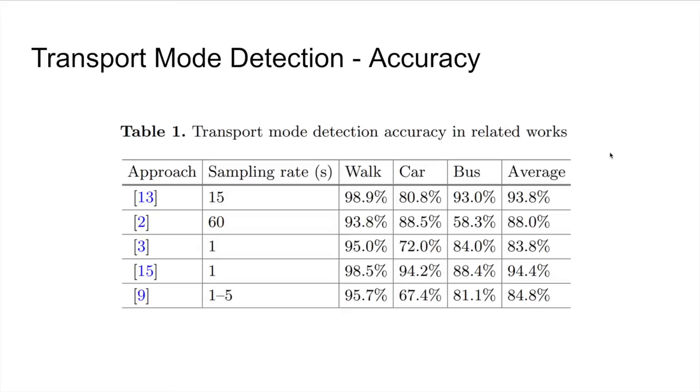Here are some results obtained by other transport mode detection approaches. I'm going to glance rapidly over them due to time constraints, but the important takeaway on this slide is the average accuracy for each of them, which ranges from 80% to 94%, and it's not necessarily correlated with the sampling rate.